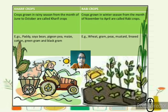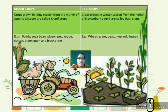Kharif crops are grown in the rainy season, between the months of June to October. Examples are paddy (rice), soya bean, pigeon pea, maize, cotton, green gram, and black gram. Rabi crops are grown in the winter season, from November to April. Examples include wheat, gram, peas, mustard, and linseed.